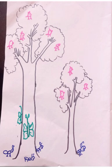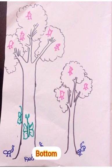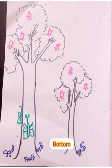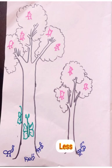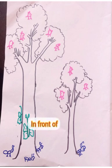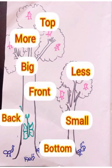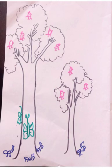Again, look at the big tree. There is a butterfly in front of the tree and there is another butterfly at the back of the tree. All of you try to draw a picture like this in your notebook, including all these concepts.